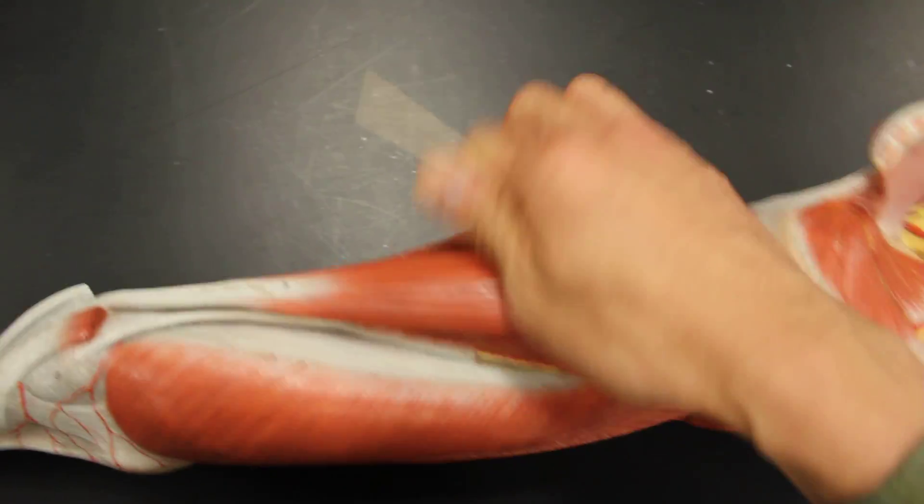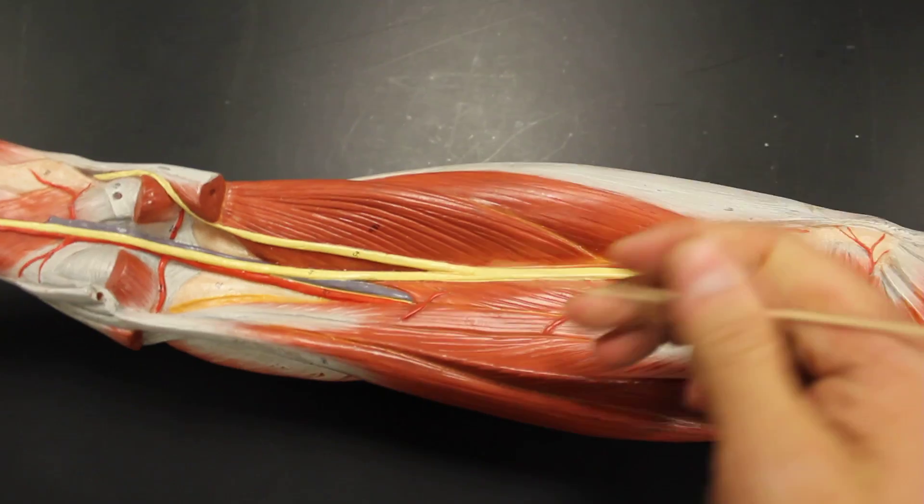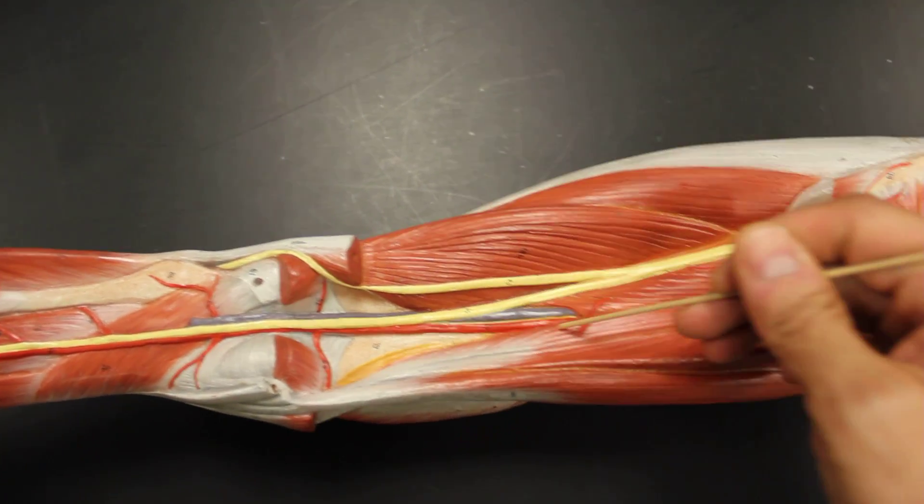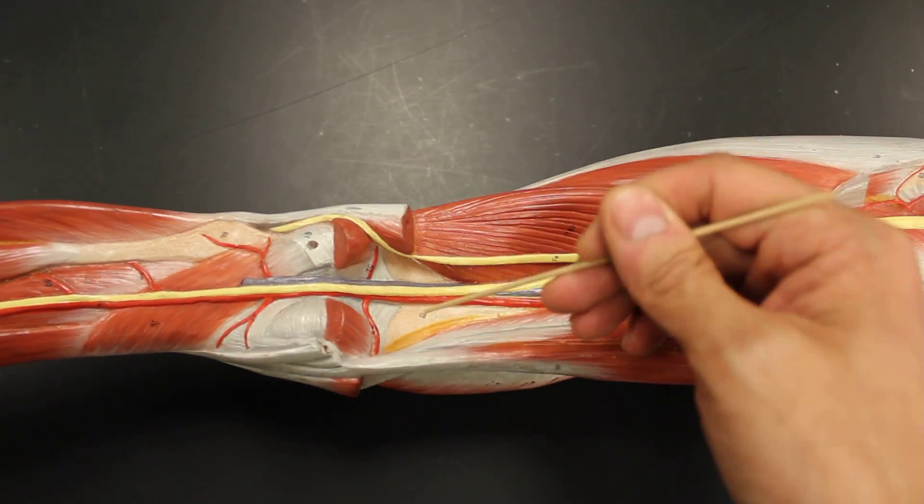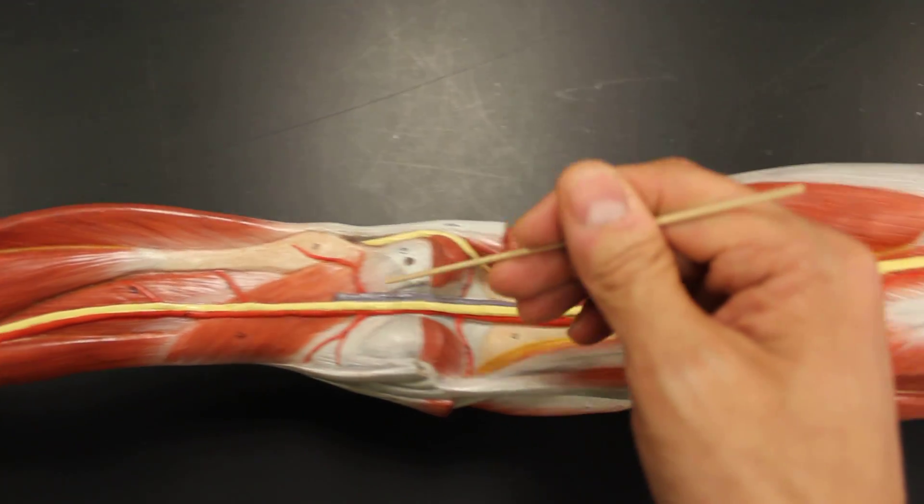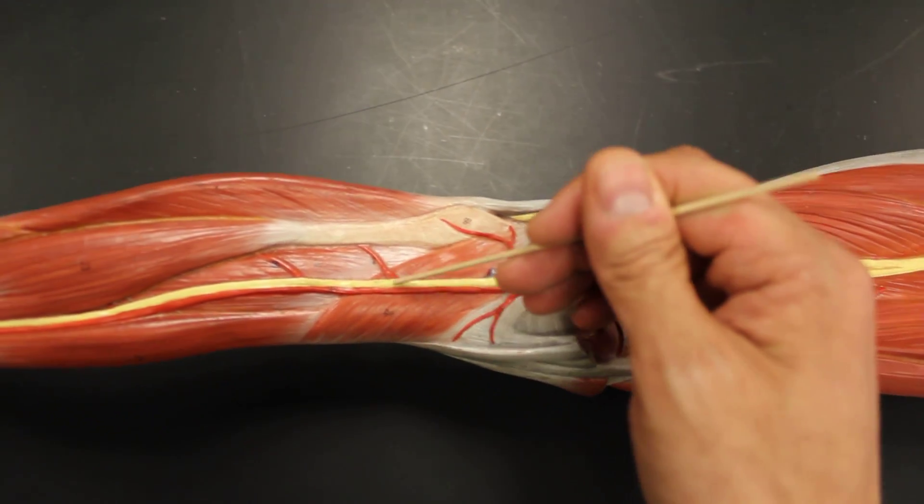The femoral pierces the adductor hiatus, turns around on the posterior side and becomes the popliteal artery. Popliteal, because it's in the popliteal region.